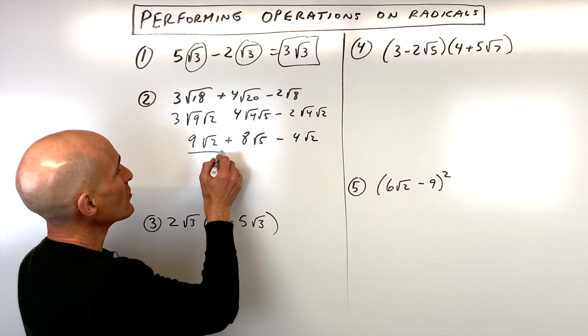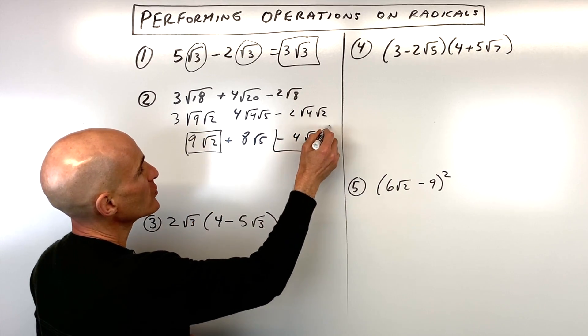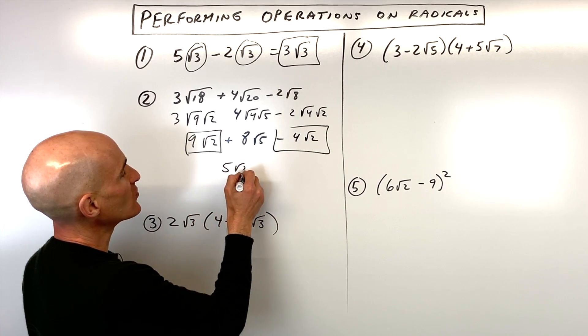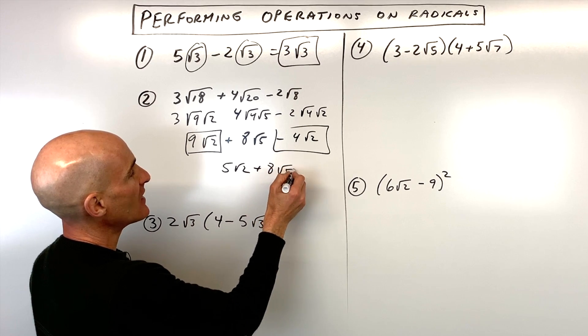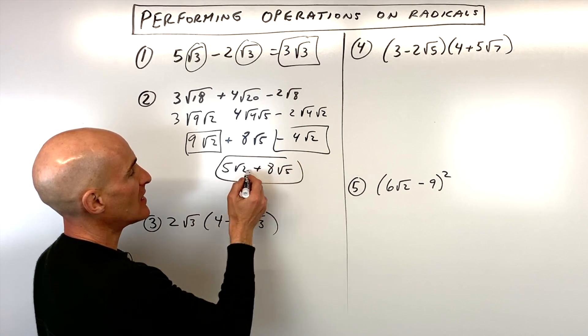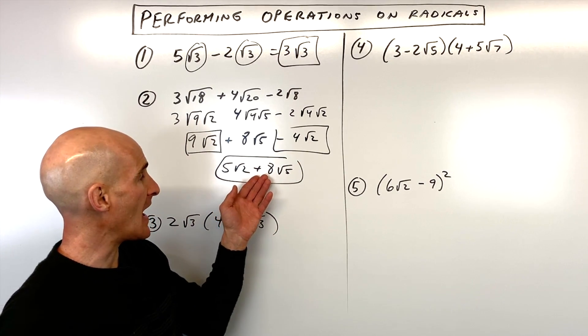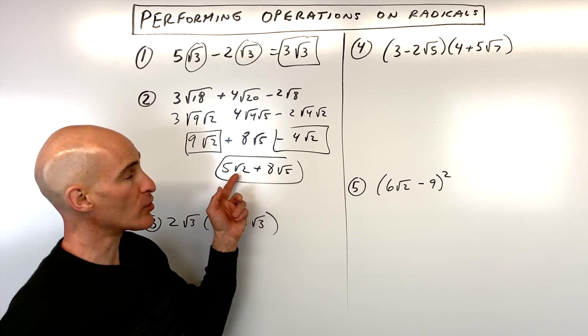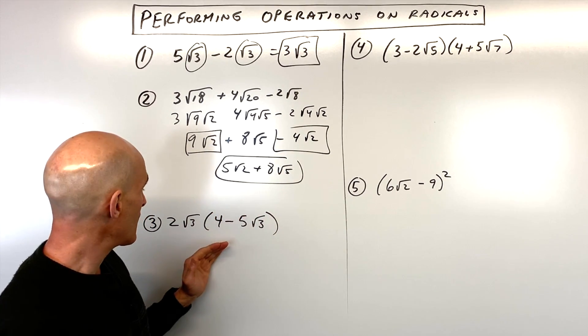Notice that we've got nine square roots of two minus four square roots of two, which is five square roots of two plus eight square root five. And we can't combine these further. They're just added. We have to have the same type of square root in order to combine those together.